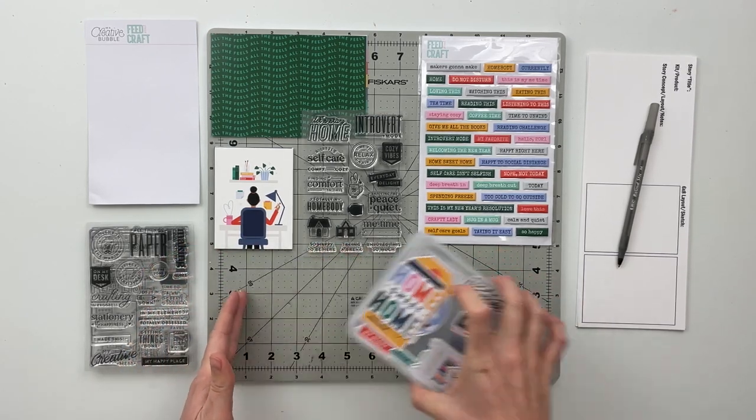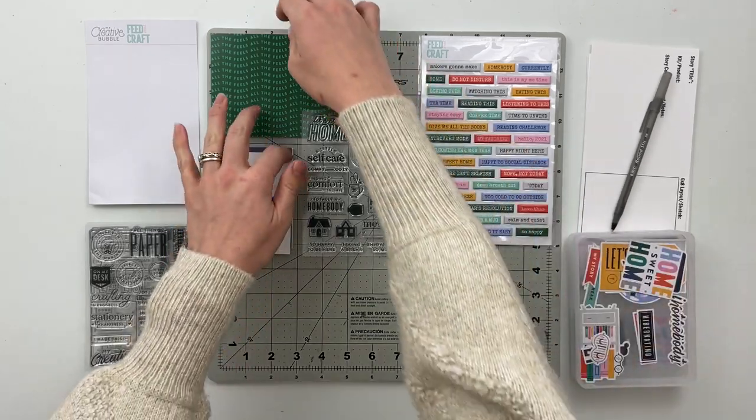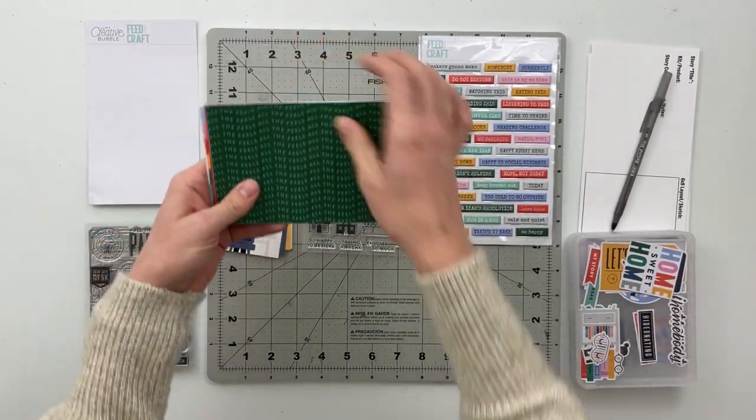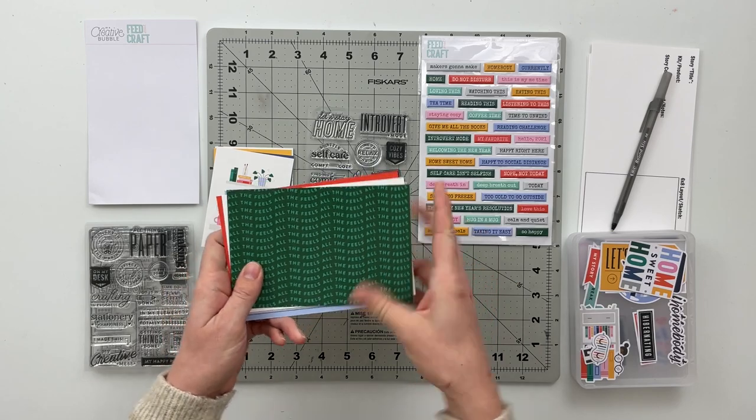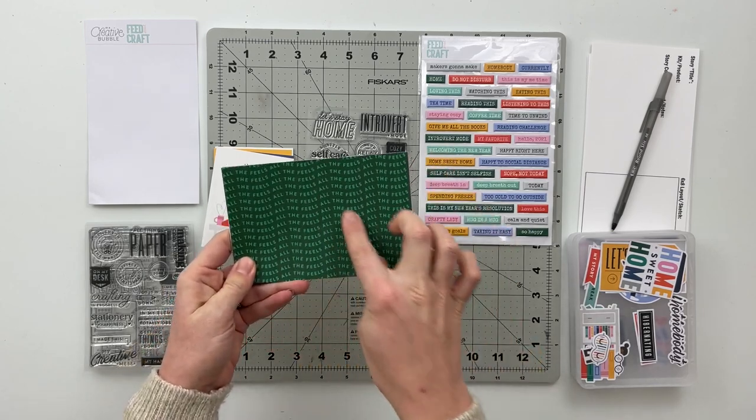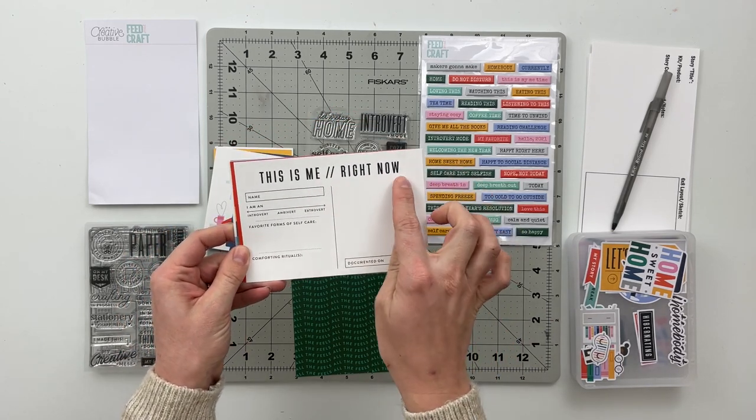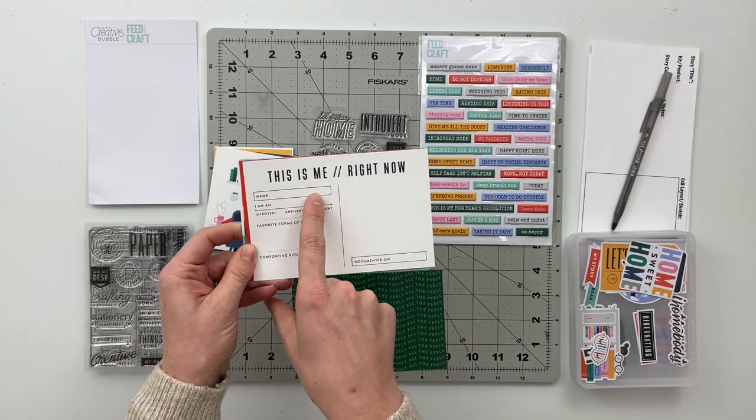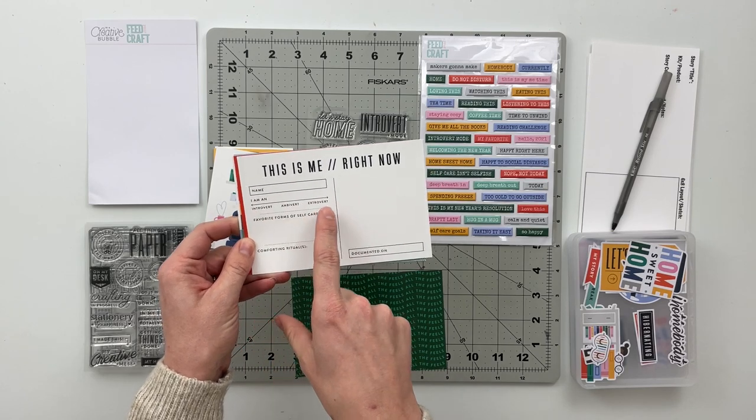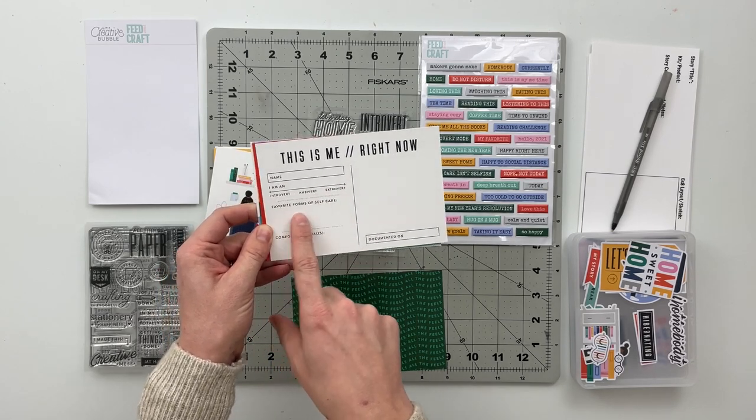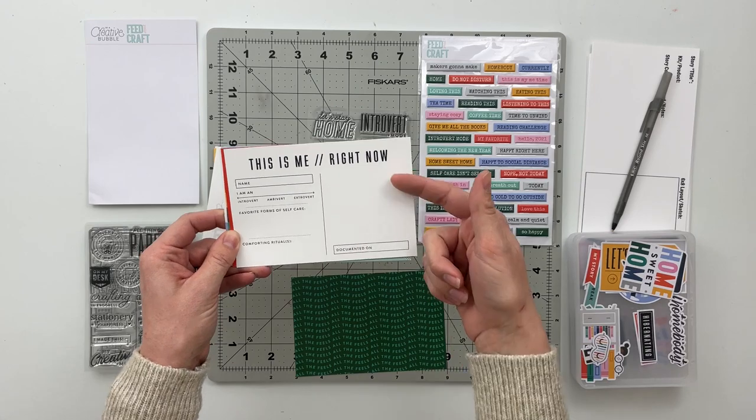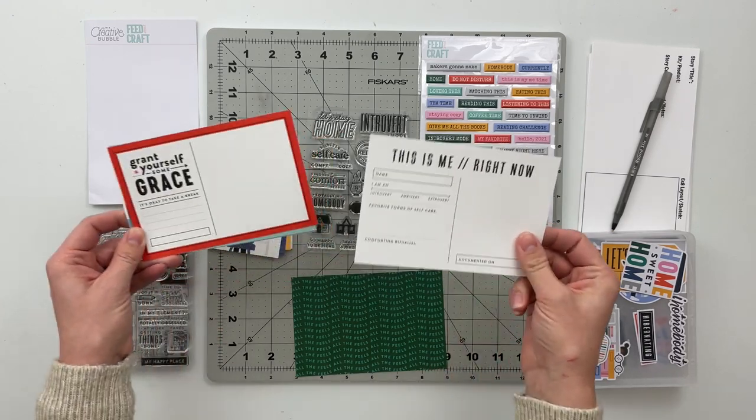So let's start with the journaling cards. The kit comes with a selection of four by six journaling cards. This one has a wavy pattern and says all the feels. This one is 'this is me right now.' We've got a space to put the name. I am an introvert, ambivert, extrovert, favorite forms of self-care, comforting ritual, a place for a photo and documented on.